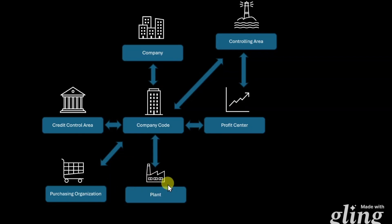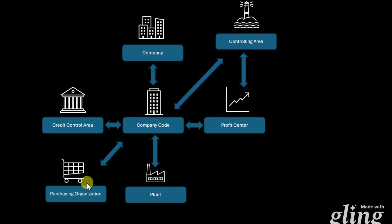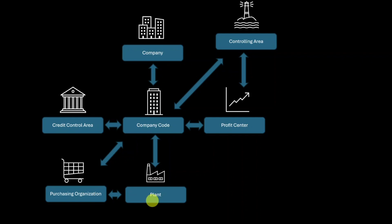Rather, we can assign the purchasing organizations to the so-called plant. A plant represents a location where we produce our products, store them, and from where we also ship our products to our customers. One or multiple plants can be assigned to the same company code; however, two company codes cannot be assigned to the same plant. We could either assign the company code directly to a purchasing organization, or assign the plant to a purchasing organization — and since a plant is also linked to a company code, the company code will be indirectly linked to the purchasing organization.